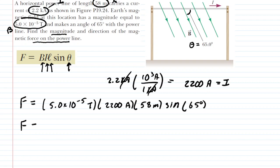And after punching that into our calculator, making sure that it is set to degree mode, we end up with approximately 5.8 newtons. This is the magnitude of the force acting on the power line.